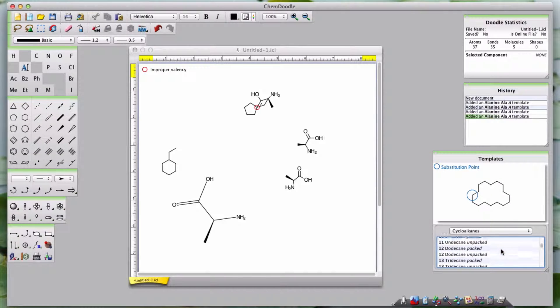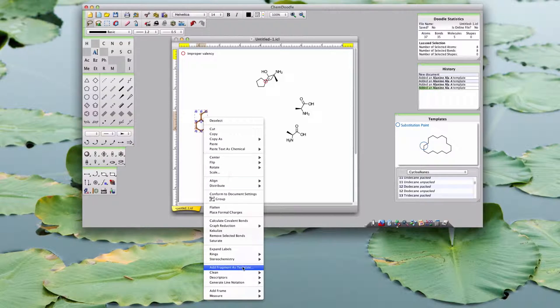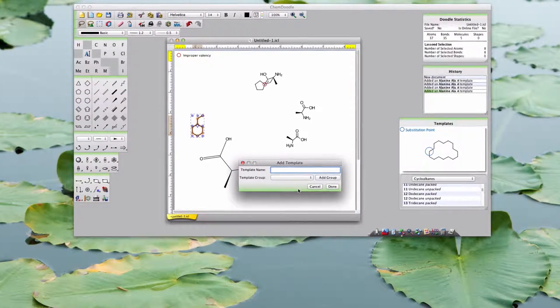If you want to add a new template to the template widget, select the fragment you want to add as a template. Right-click and choose Add Fragment as Template. Give the template a name.